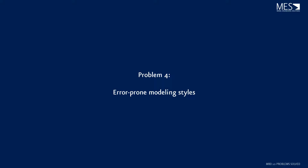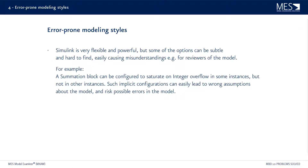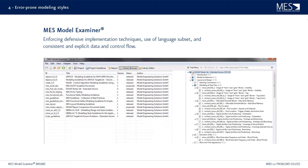This brings us to problem number four: error-prone modeling styles. As already mentioned, there are several ways to do something in Simulink. It is very flexible and powerful, but some options can be very subtle, difficult to find, and can cause misunderstandings for reviewers. For example, a summation block can be configured to saturate on integer overflow in some instances but not others. Such implicit configurations can easily lead to wrong assumptions and risk possible errors. MES Model Examiner can help here as well, enforcing defensive implementation techniques, the use of language subsets, and consistent and explicit data and control flow.